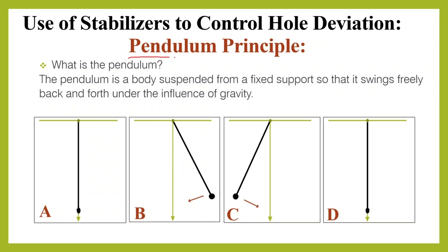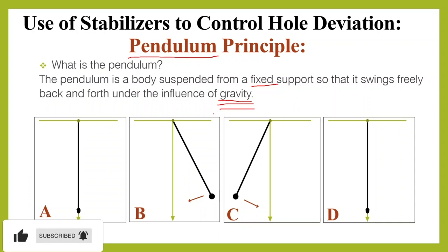First, we need to review some information about the pendulum from physics. The pendulum is a body suspended from a fixed support so that it swings freely back and forth under the force of gravity. The force that makes the pendulum swing freely back and forth is gravity — the influence of gravity.